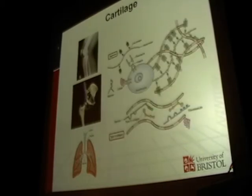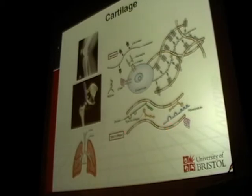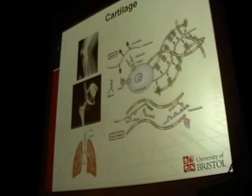Cartilage has quite a simple structure in that it consists of only one particular type of cell, which is the chondrocyte. The chondrocyte is responsible for producing and maintaining the vast extracellular matrix in which it sits. The matrix consists of two major components: the long fibrillar structures, which is type 2 collagen, and this gives cartilage its strength; and then brush-like structures, which are aggrecan molecules, and they absorb water and allow cartilage to act a bit like a sponge and carry out its shock-absorbing capabilities.